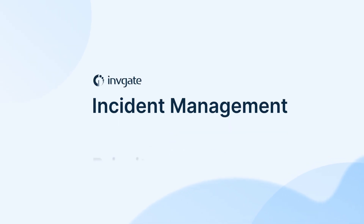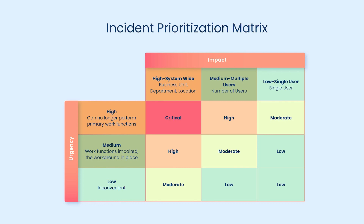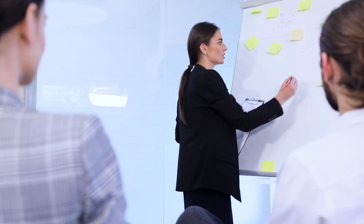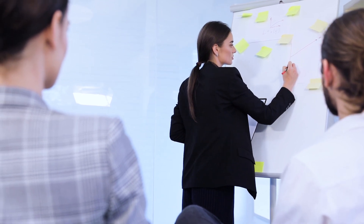Incident management is all about speed, so it makes sense that incident prioritization is a vital part of the process. A typical ITIL incident priority matrix will look like the following. As you can see, there are three levels of impact and three levels of urgency, and combining them gives five potential priority scores, which will help triage incidents effectively. Incident management priorities should be linked to service levels so that the most critical incidents are resolved first, and support for this is codified in a service level agreement.